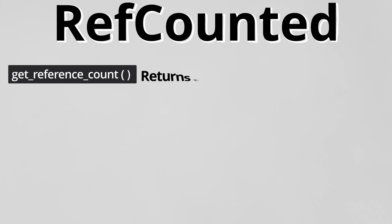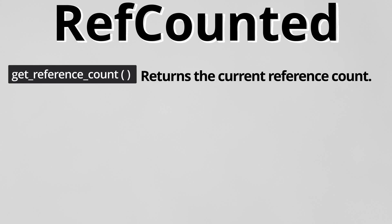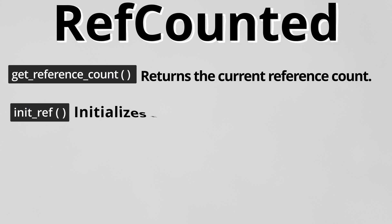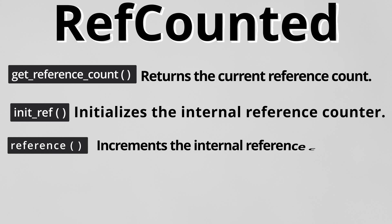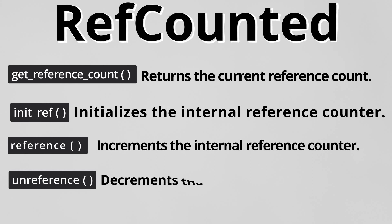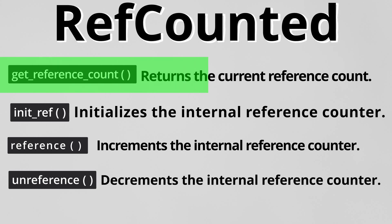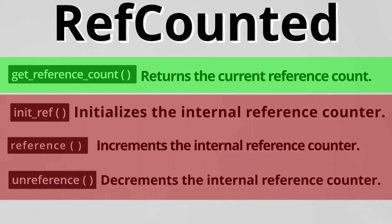The RefCounted class has some methods you can also access from inside Godot: get_reference_count(), which gives you the current ref count number; init_ref(), used for initialization; reference(), which adds one to ref_count; and unreference(), which decreases ref_count by one. You might use get_reference_count(), but I suggest don't touch the other three methods because Godot automatically calls reference and unreference for you. Using them manually can cause a memory leak or cause your data to be deleted while you still need it.